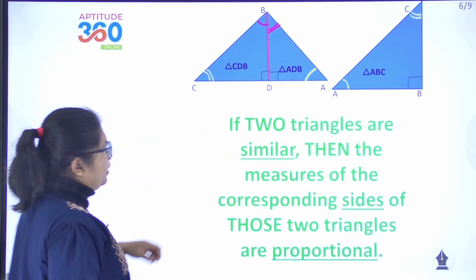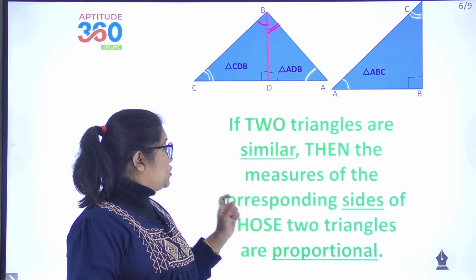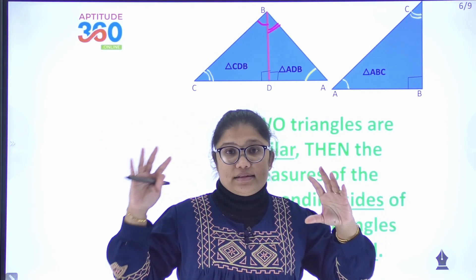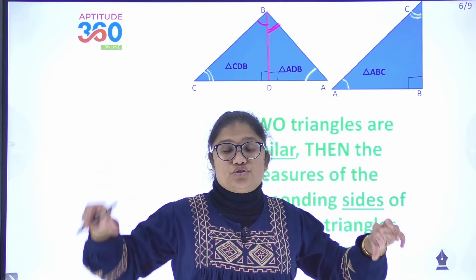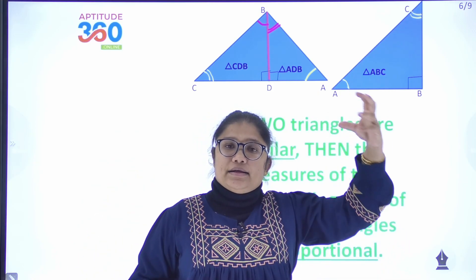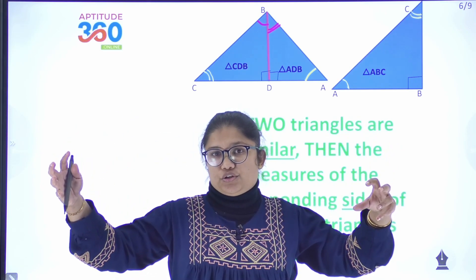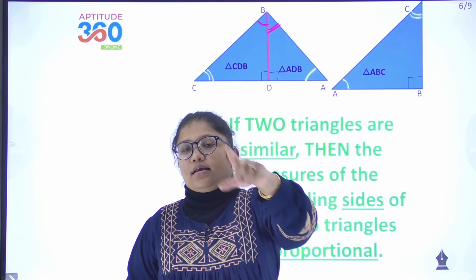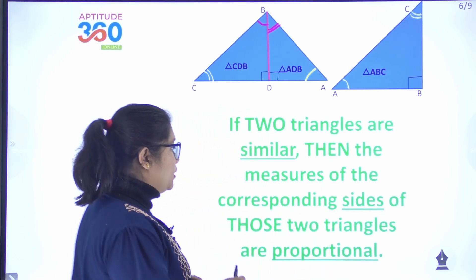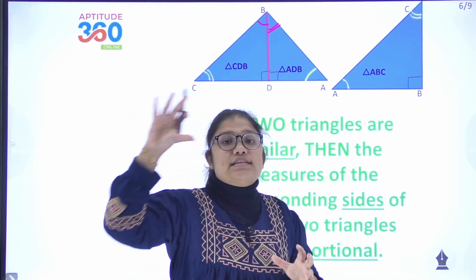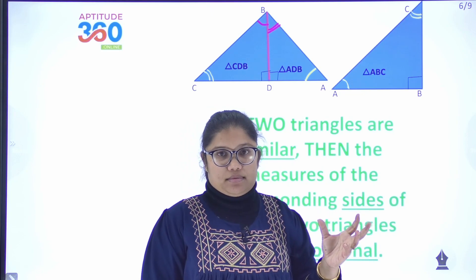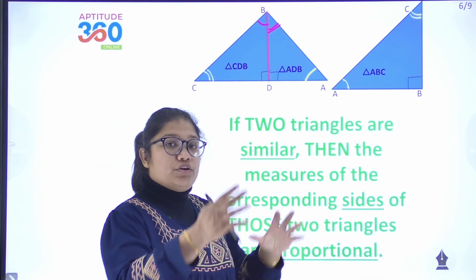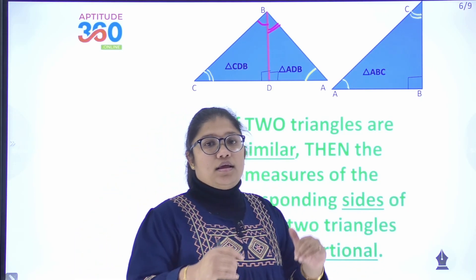If two triangles are similar, the measures of their corresponding sides are proportional — that is, in the same ratio. The ratio of corresponding sides will be equal: for example, the hypotenuse of one triangle over the hypotenuse of the other equals the ratio of the perpendiculars. I wanted to prove the triangles similar first so I can now establish a relationship between the sides of triangle ABC.